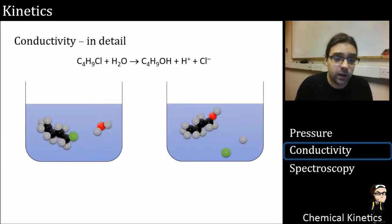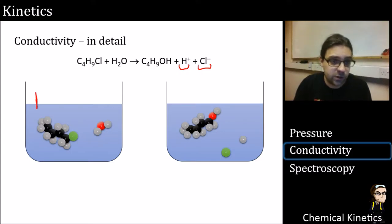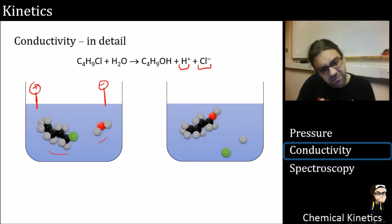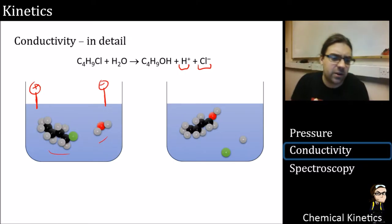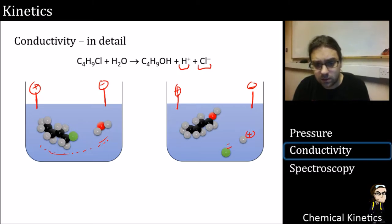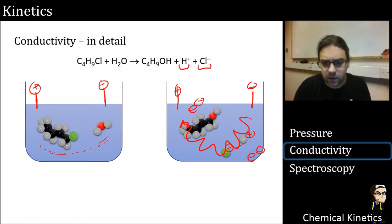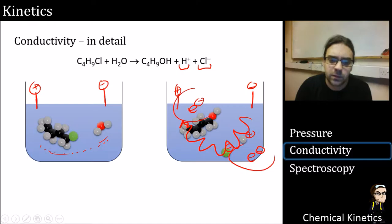Now let's go to conductivity. Conductivity works if something is splitting into charges, or charges are coming together. If we stuck an electrode into fairly neutral molecules, there'd be very little conductance. But if those electrodes are in a solution containing H⁺ and Cl⁻, you're going to get a lot of conductivity — the ions are going to fly all over the place. You're going to get a high conductivity measurement.